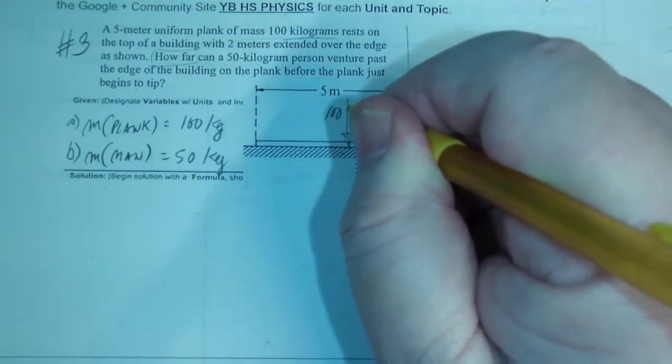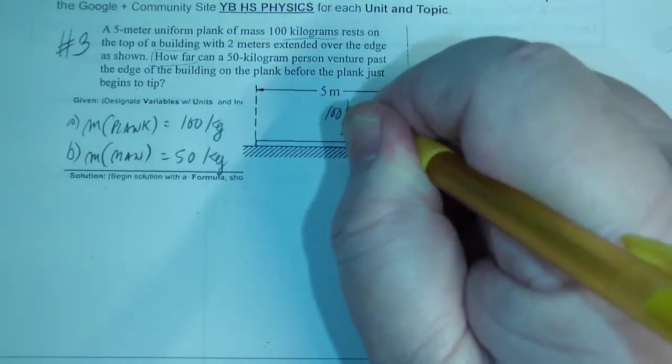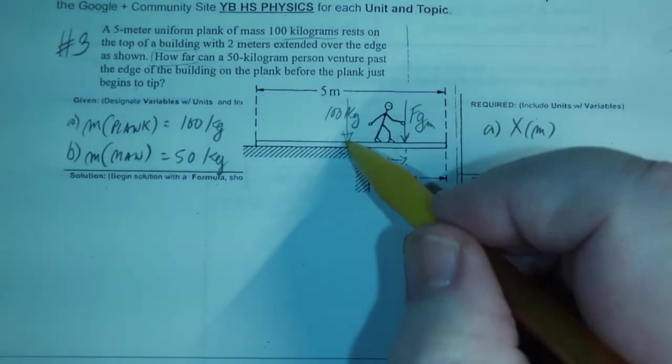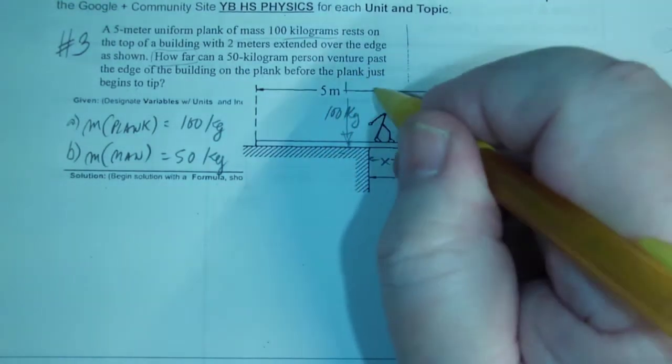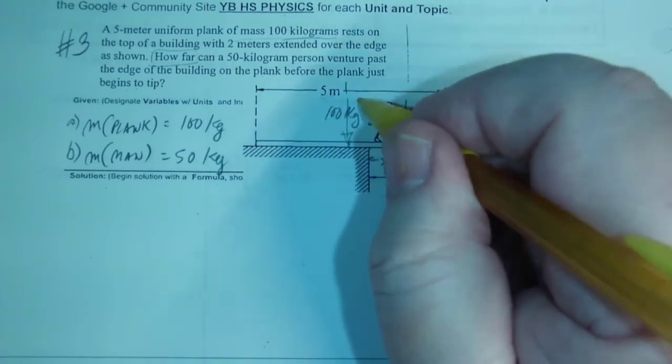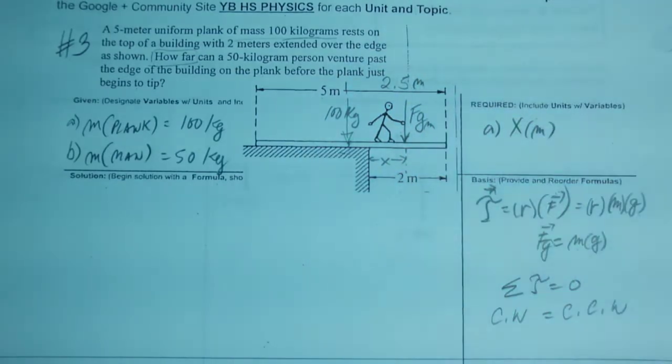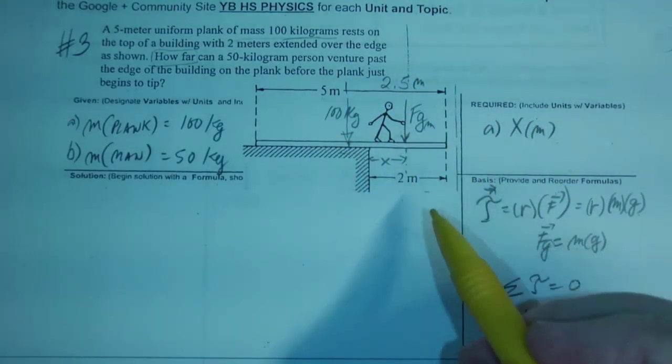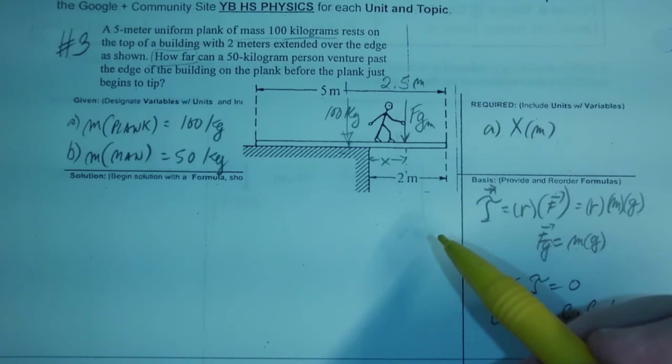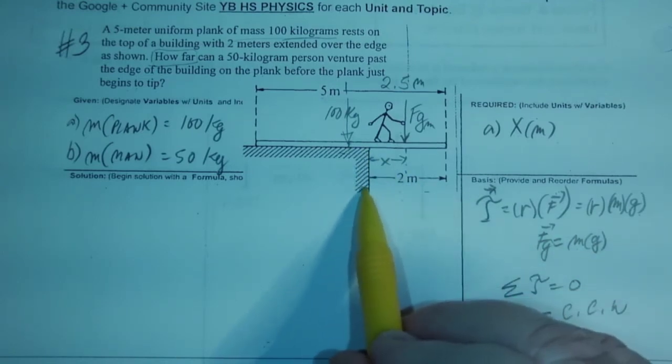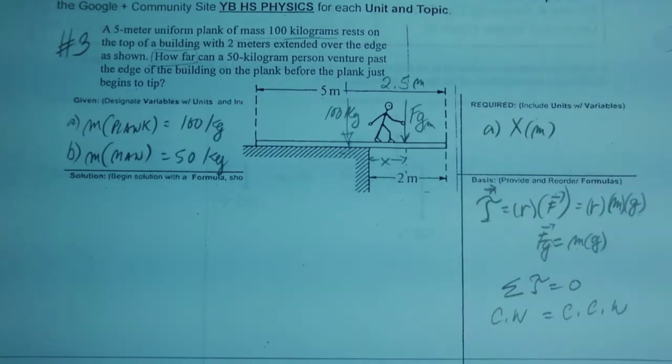Which is 100 kilograms times the acceleration due to gravity. How far is that? Well, if it's in the middle, this is 5 meters, so half of that is 2.5 meters. That's how far away from the edge it is, and we see that the plank is 2 meters away from the edge.